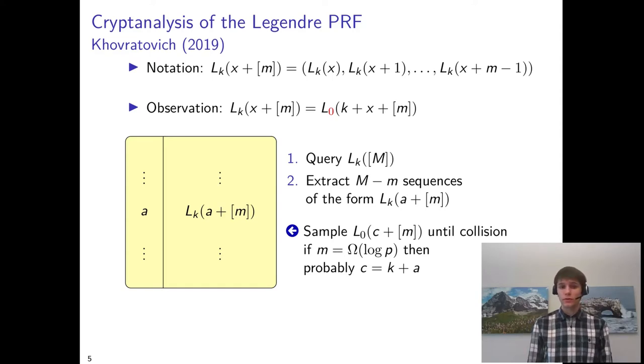So the attack proceeds as follows. We make m queries to the Legendre PRF, and then extract from this roughly m sequences of Legendre symbols. We store those sequences in the table, indexed by the offsets a.